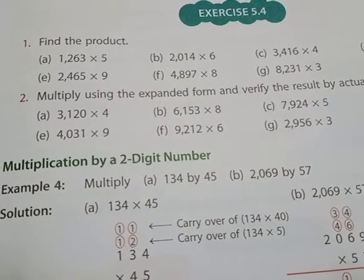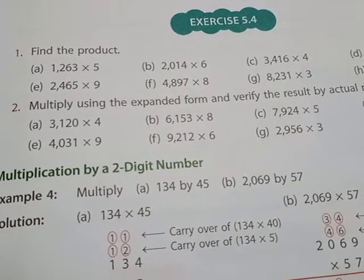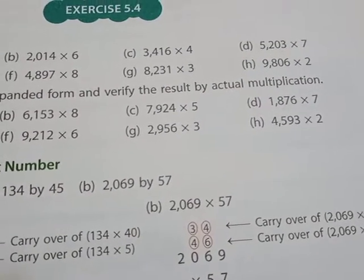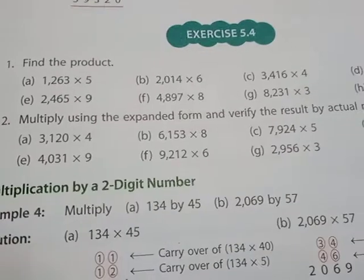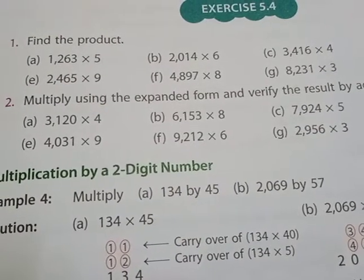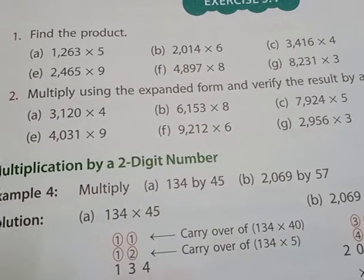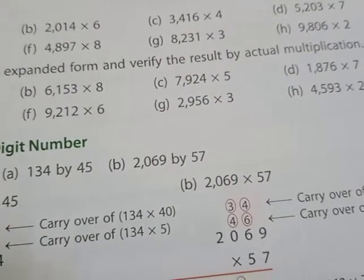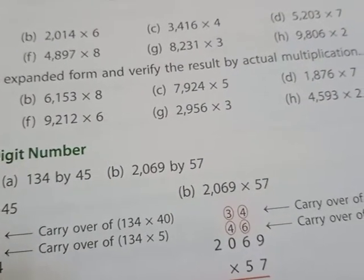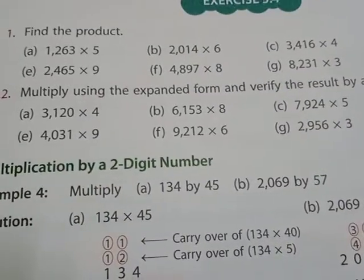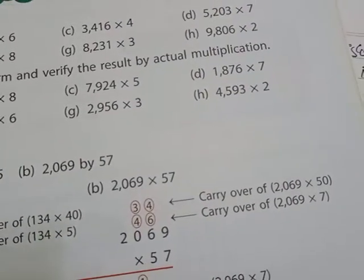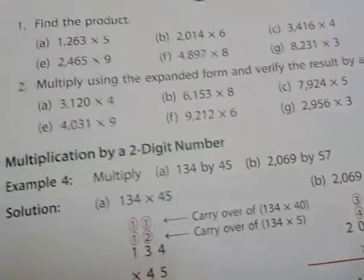Question number two: multiply using expanded form and verify the result by actual multiplication. First of all we have to expand and multiply. After expanding and multiplying, we have to verify — verify means check — check that our expanded answer is correct or not. How to check it? By doing actual multiplication.